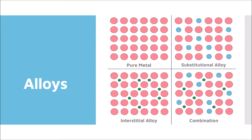Whenever other substances are added to a pure metal, an alloy is formed. In a pure metal, you should notice that there is an arrangement to the atoms — a pattern to the way that they are arranged in the structure.